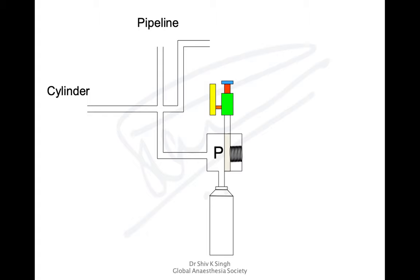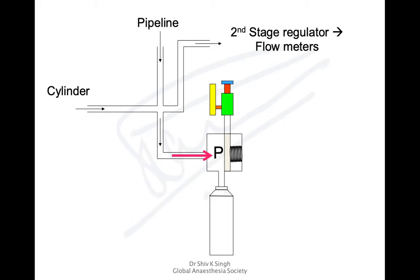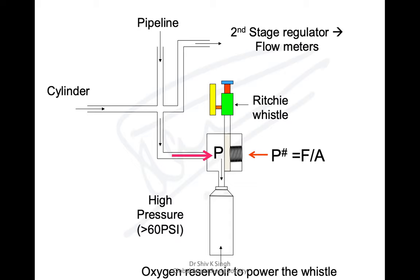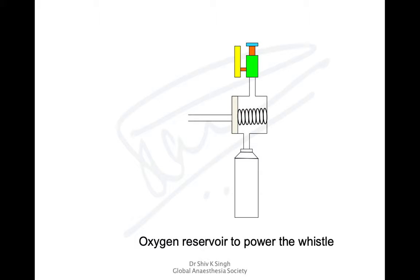In this diagram, oxygen comes from the pipeline or cylinders and goes to the machine at the top. Some of it also fills the small accessory cylinder, which closes the valve — the flow acting on the spring closes the valve to the whistle on top. The yellow, green, and red part is the whistle. This operates at high pressure of 50 to 60 psi. When the pressure drops, the valve moves and closes off the low pressure system, and it's now open to the accessory oxygen cylinder, which works at a lower pressure of 30 psi down to 6 psi. The gases then flow through the whistle and sound it.